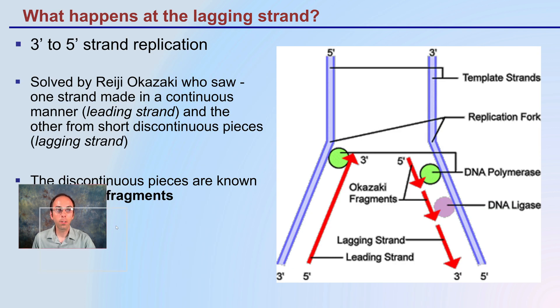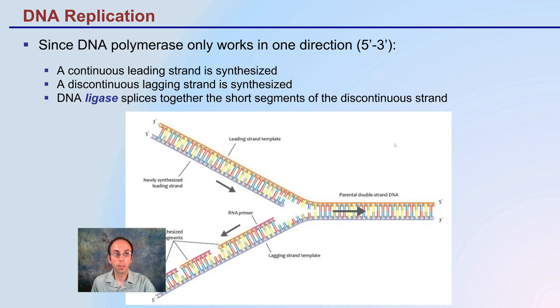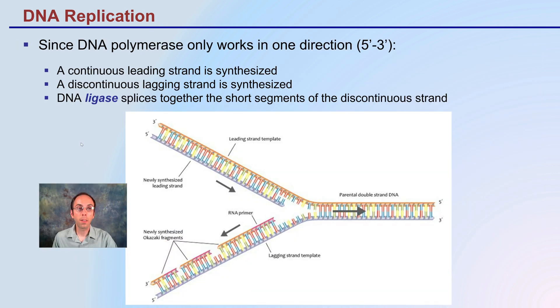So what happens at the lagging strand? Okazaki saw one strand made continuously, termed the leading strand, and then the other is the lagging strand. There's these discontinuous little pieces known as Okazaki fragments, at least initially during the replication process. Since DNA polymerase only works in the 5 to 3 prime direction, the continuous leading strand is synthesized and the discontinuous lagging strand. Therefore, we need DNA ligase to splice together these short segments to create a continual strand of DNA as the end result.